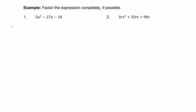Let's look at m times n — two factors that multiply to a times c, or 5 times negative 18, which is negative 90. And at the same time, m plus n needs to add to our b value, negative 27.